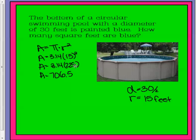And when we square it, we get 225. If we multiply that by pi, we get 706 and 5 tenths feet squared.